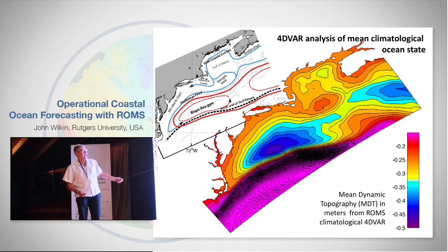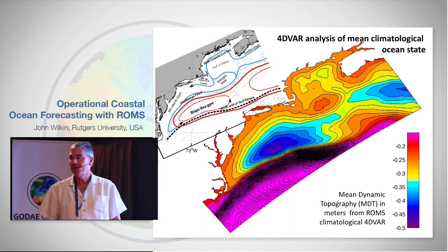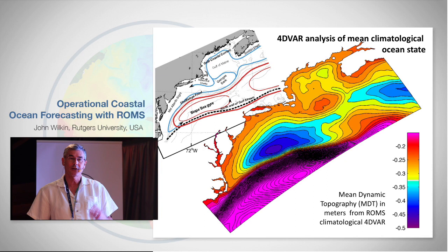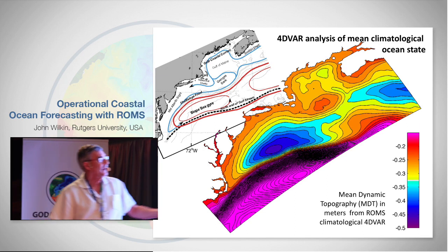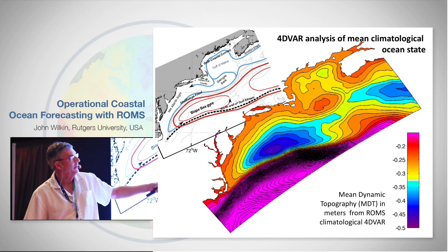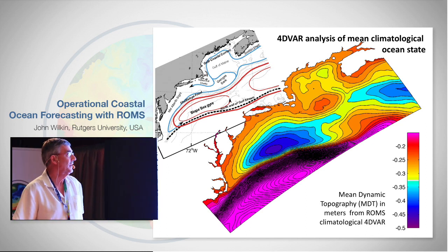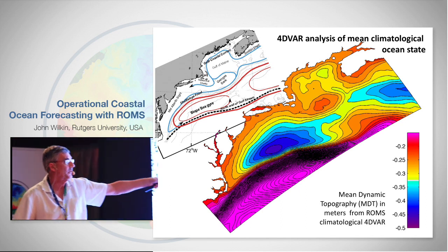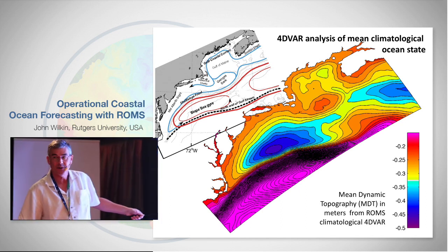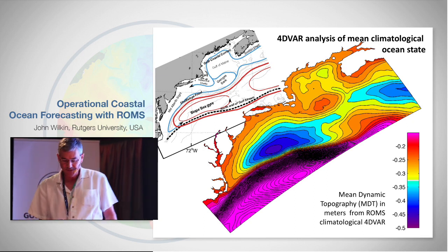We have the Gulf Stream out here, and we've constrained our MDT to match CLS 13 so that we can have a seamless transition through to the global scale. But we needed to recover some detail in the coastal circulation that is missing from these large-scale, basin-scale and global models like Mercator Ocean and HICOM.